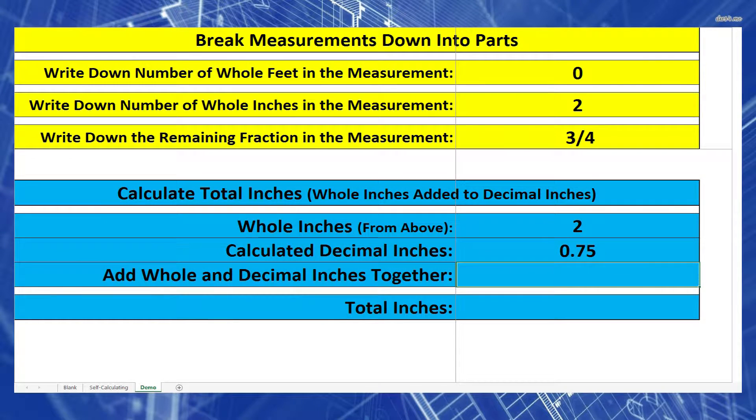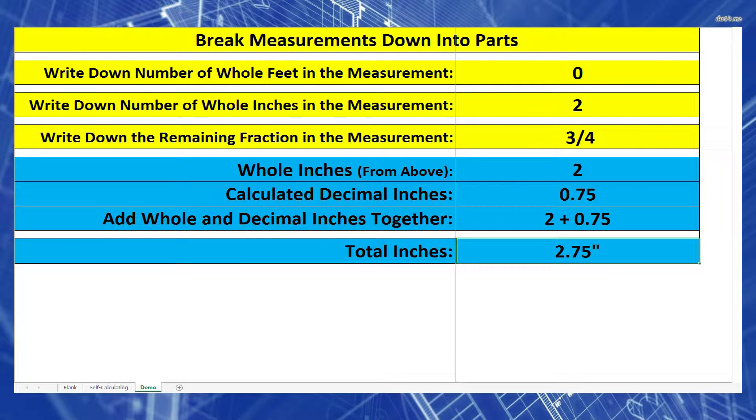The next step is really easy. I have two whole inches. I'm going to add it to my decimal inches, 0.75. So I have 2.75 inches. And that's it, I'm done.